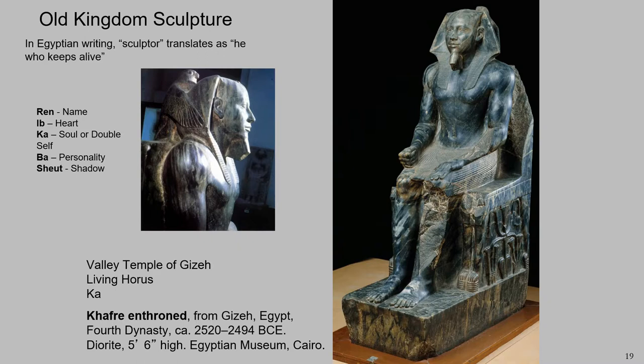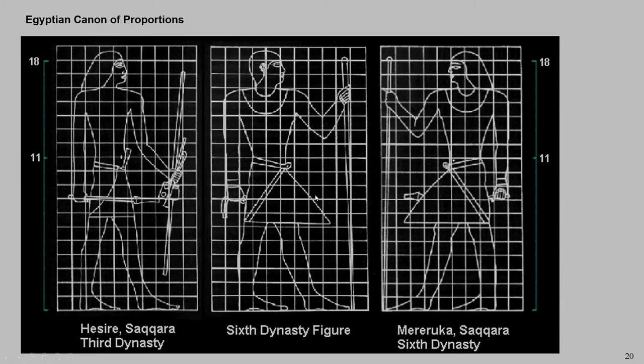In fact, the word sculptor itself means 'he who keeps alive.' So the job here isn't to represent the pharaoh, but it is to house the soul of the pharaoh — the Ka of the pharaoh. These sculptures had very strict rules and regulations. In general, Egyptian art had very strict rules and regulations. Egyptians were obsessed with this idea of permanence, and you can see that by the fact that their art and architecture changed relatively hardly at all throughout this almost 3,000-year period of Egyptian rule.